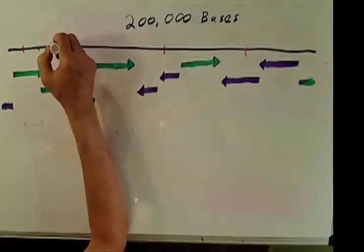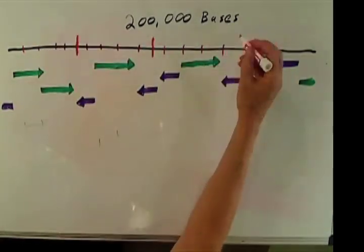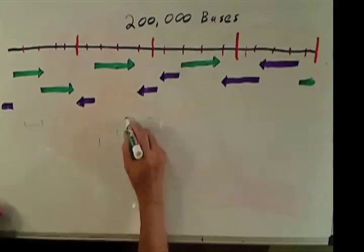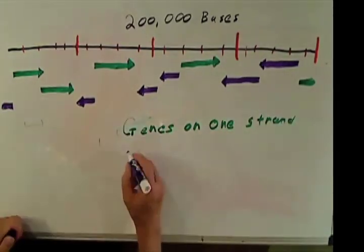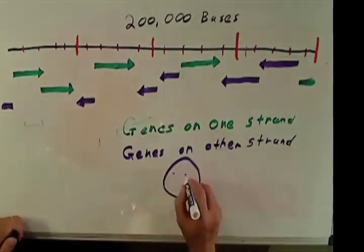In fact, exactly half point in one direction and half the other direction. So DNA has no top or bottom or left or right. It is all determined by how the transcription factor finds the promoter.